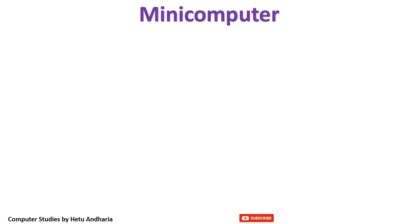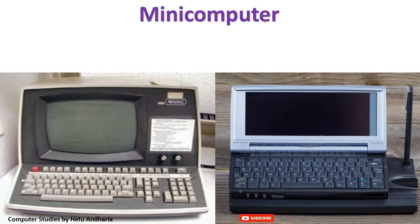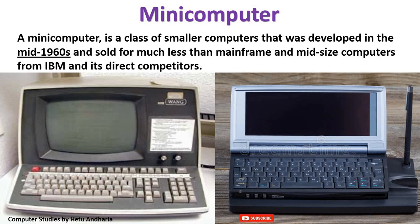The third category is the mini computer. It is not in use right now, but the textbook has included it. It was existing in the 1960s. A minicomputer is a class of smaller computers that was developed in the mid-1960s and sold for much less than mainframe and mid-size computers from IBM and its direct competitors.